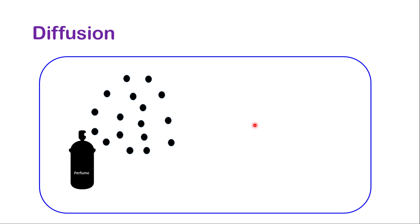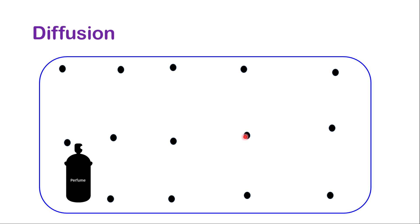Something important to note about how particles move: particles are always moving randomly and constantly. This random, constant motion of particles will allow them to move and try to fill all the space available to them. As a result, when all the particles are moving, they move until they're evenly distributed. So for this reason, if you spray a cologne bottle on one side of the room, eventually you will smell the cologne all over the room.